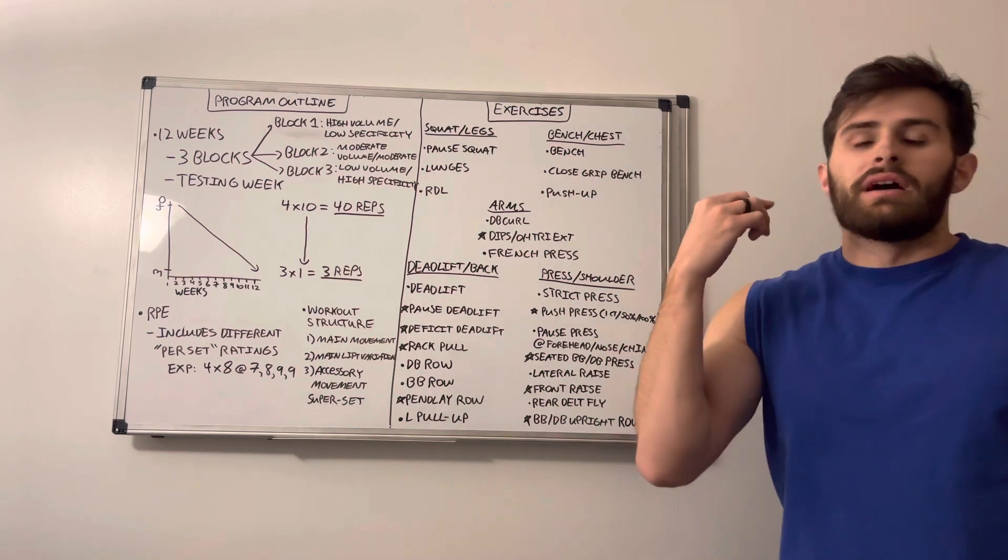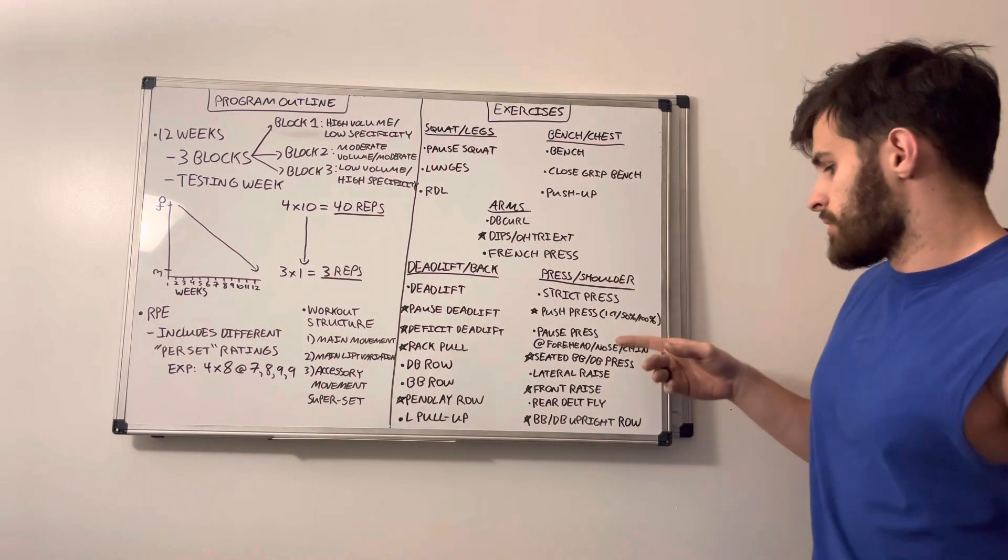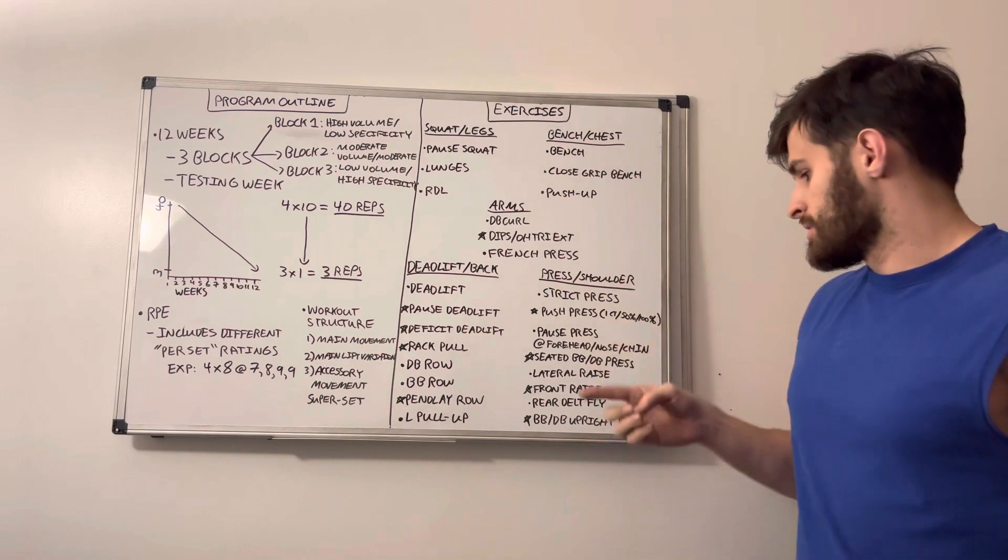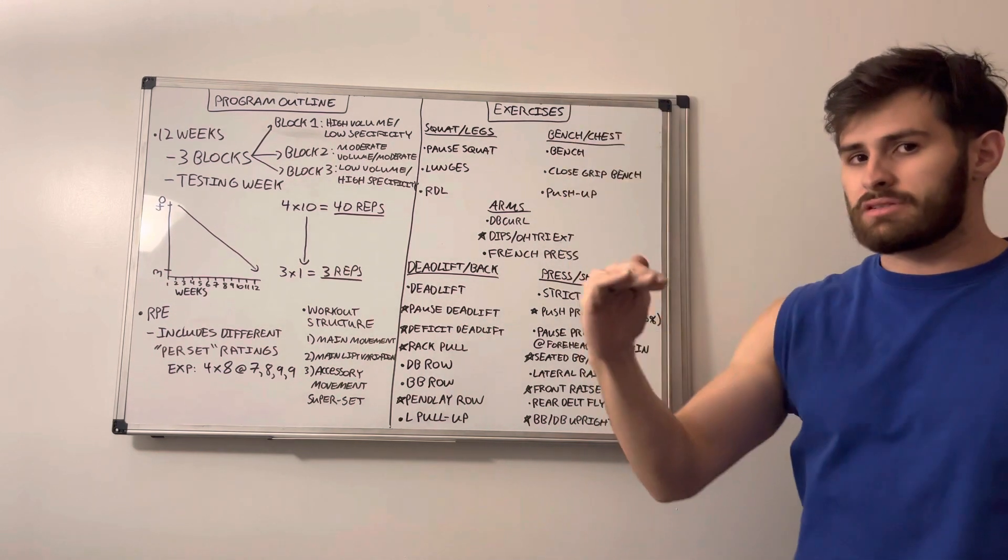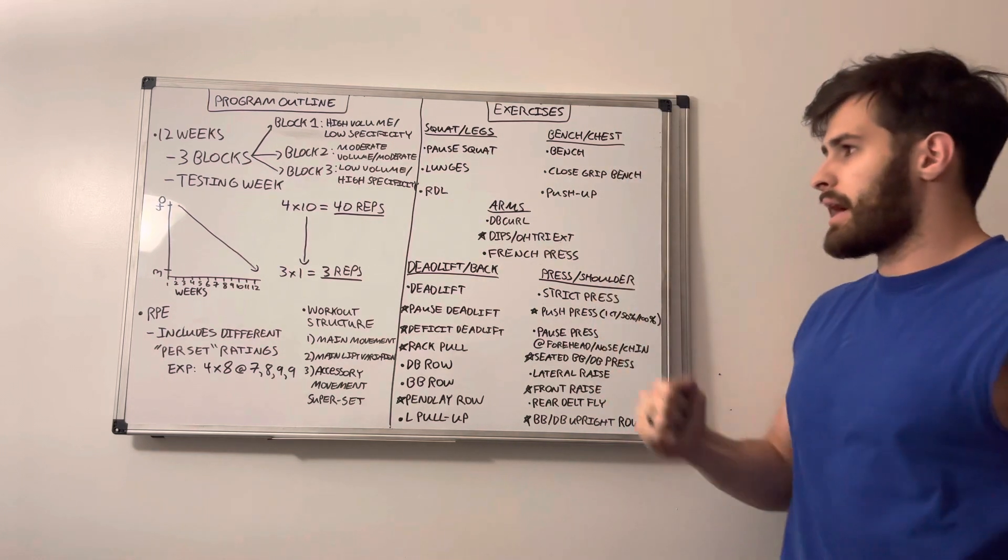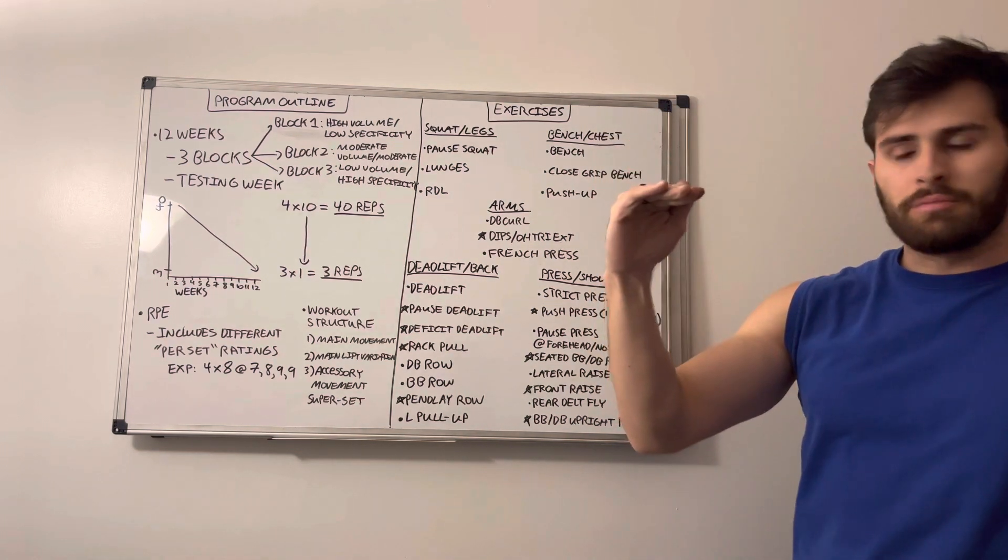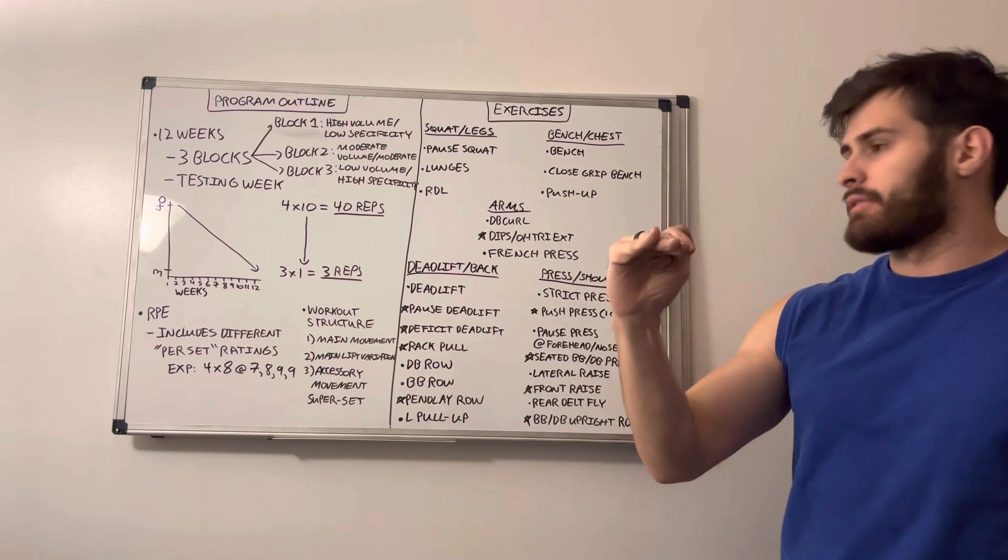The pause press, again, if you've been on the last program, you've seen this before, we're going to be using the same iterations being at forehead height, nose height, and chin height, lowering the heights per block. So forehead height for block one, nose height for block two, and then chin height for block three.